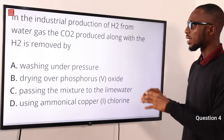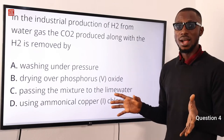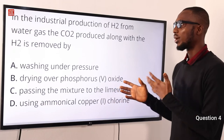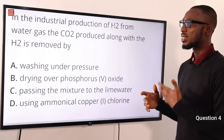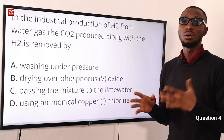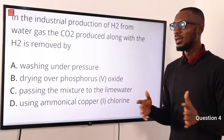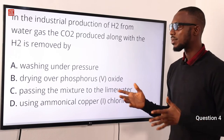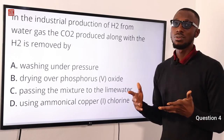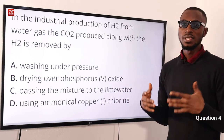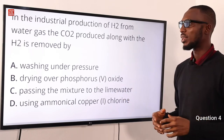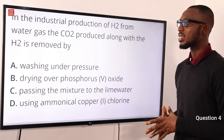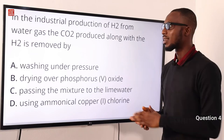For the Bosch process, this is how it happens. When you pass steam over red hot coke — that is carbon — at about 1,200 degrees Celsius, what you get is water gas.